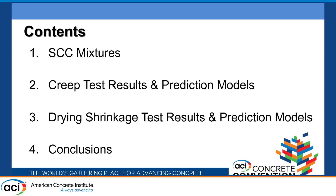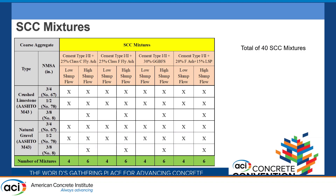In this project, focused on cast-in-place bridge construction, we did a survey to look at what different states do when they use concrete for bridge construction, and tried to mimic the range of materials involved. As you can see in this table, on the left side are the different types of aggregates — that includes crushed limestone and gravel — and three common sizes in bridge construction: three-quarter, half, and three-eighths inch.